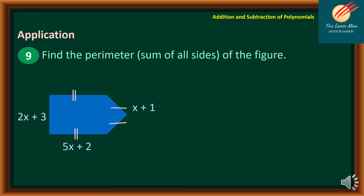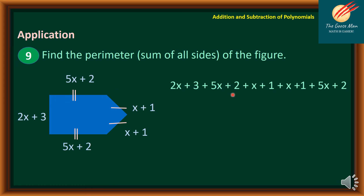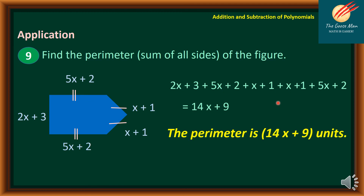Let's have the application of addition and subtraction of polynomials. Find the perimeter — the sum of all sides — of the given figure. If one side is 5x plus 2, then its opposite side is also 5x plus 2. If another side is x plus 1, then its opposite side is also x plus 1. To find the perimeter, we add all the sides: 2x plus 3, plus 5x plus 2, plus x plus 1, plus x plus 1, plus 5x plus 2, giving 14x plus 9. Therefore, the perimeter is 14x plus 9 units.